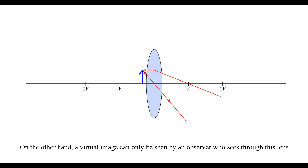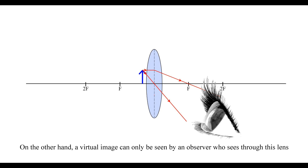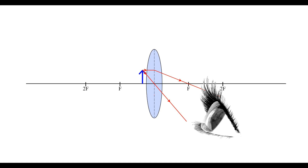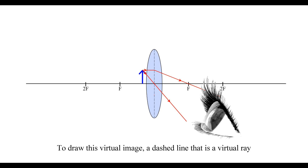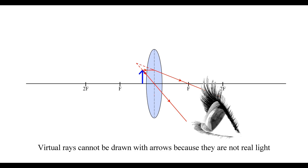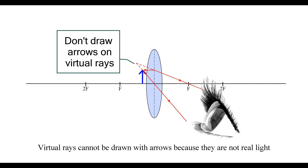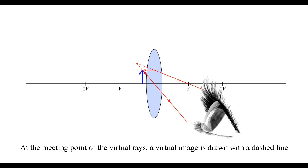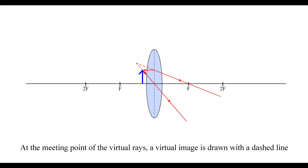On the other hand, a virtual image can only be seen by an observer who sees through this lens. To draw this virtual image, a dashed line — that is, a virtual ray — is drawn from the actual ray of light to the left of the lens. Virtual rays cannot be drawn with arrows, because they are not real light. At the meeting point of the virtual rays, a virtual image is drawn with a dashed line.